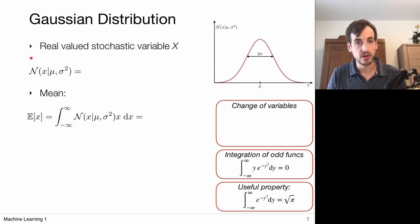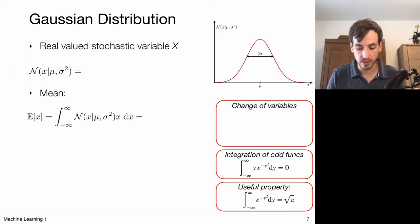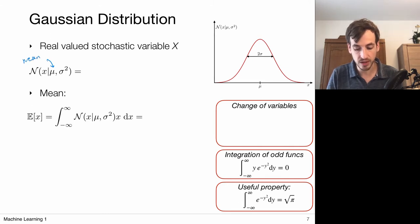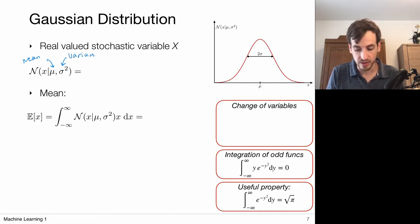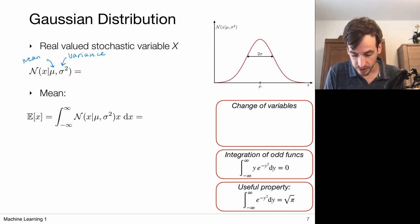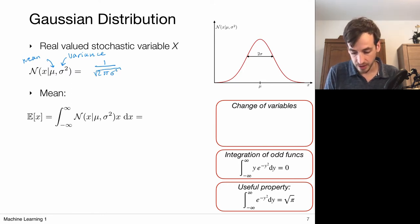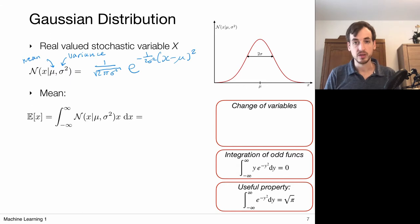The Gaussian distribution, also called a normal distribution — hence this N — is a distribution with respect to a random variable x. It is parameterized by mu, which we will refer to as the mean, and sigma squared, which we will refer to as the variance. It has this front factor of the square root of 2 pi sigma squared, and this exponential of 1 over 2 sigma squared times x minus mu squared.